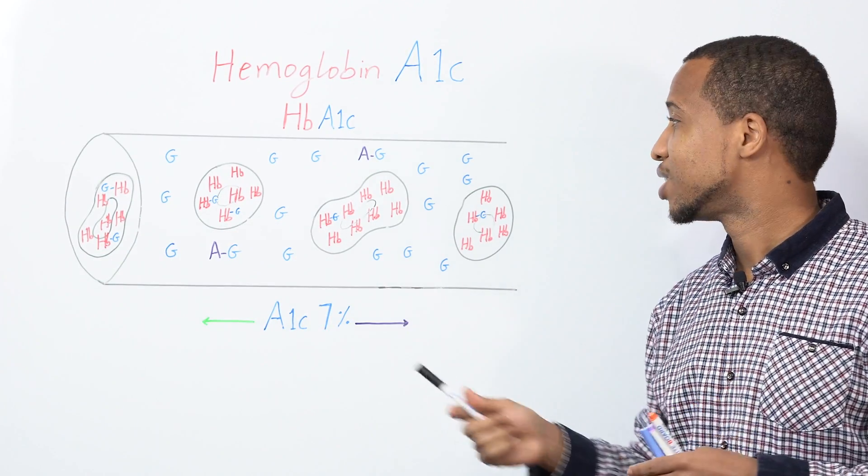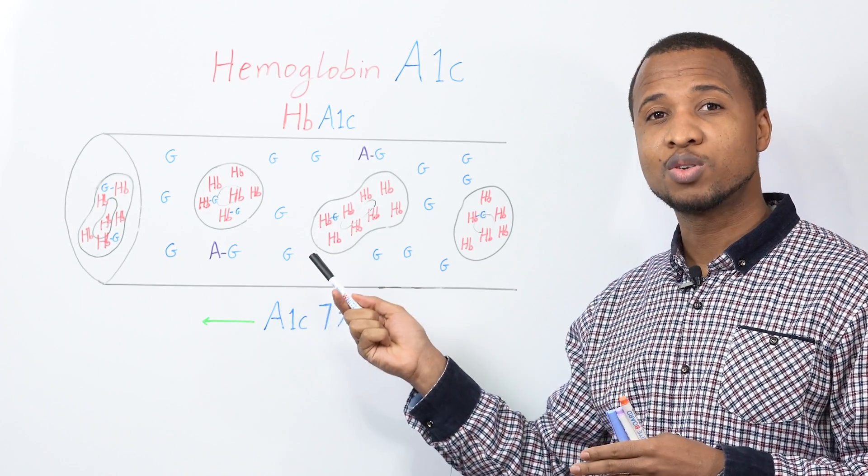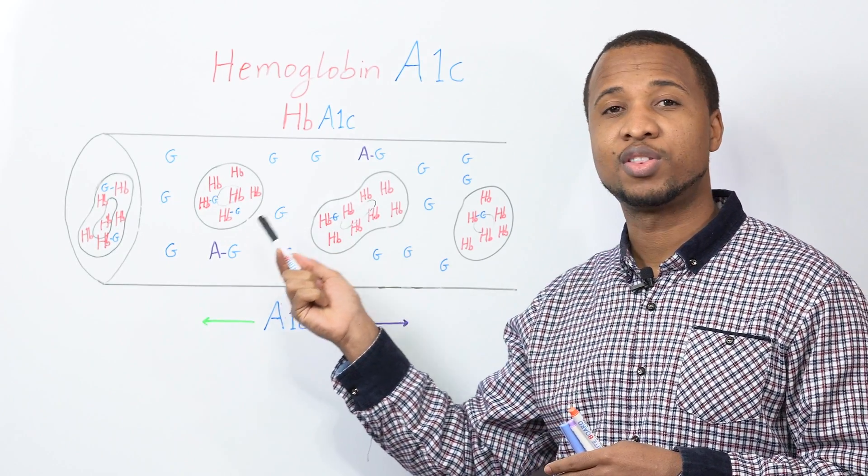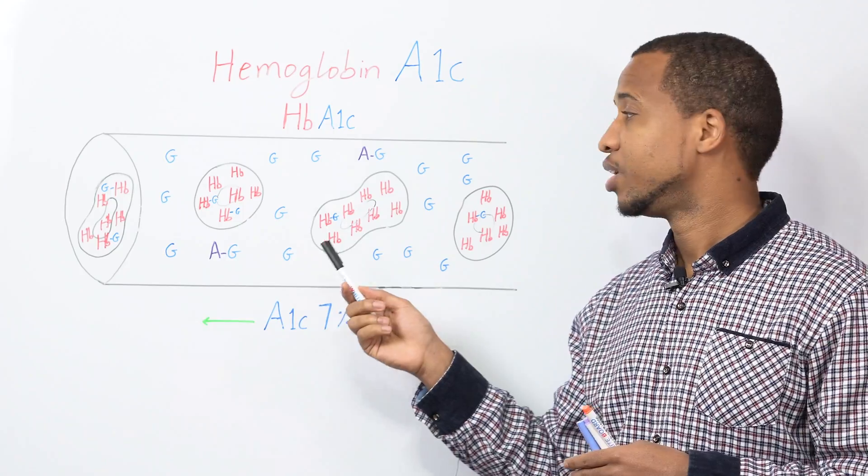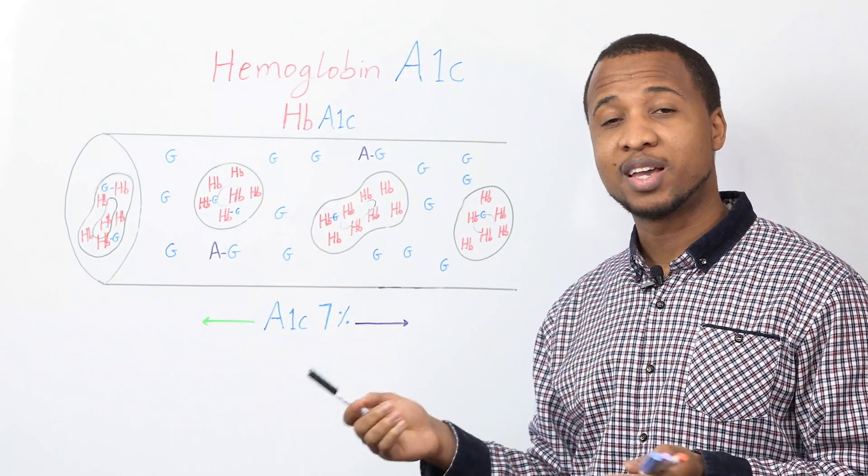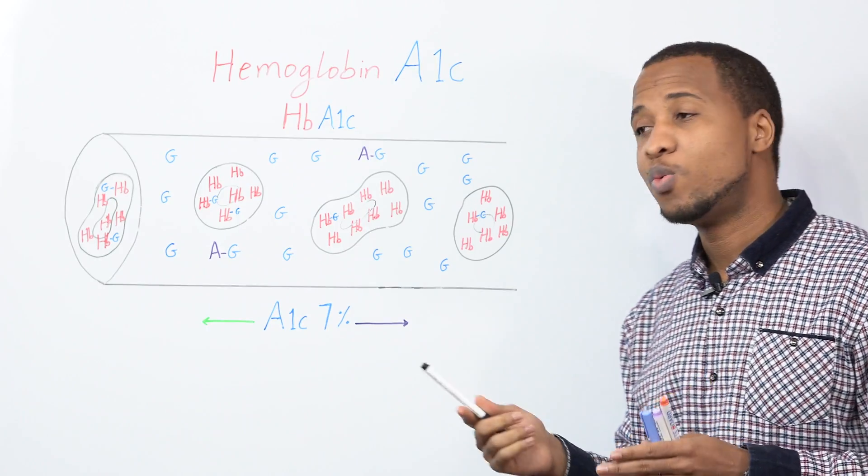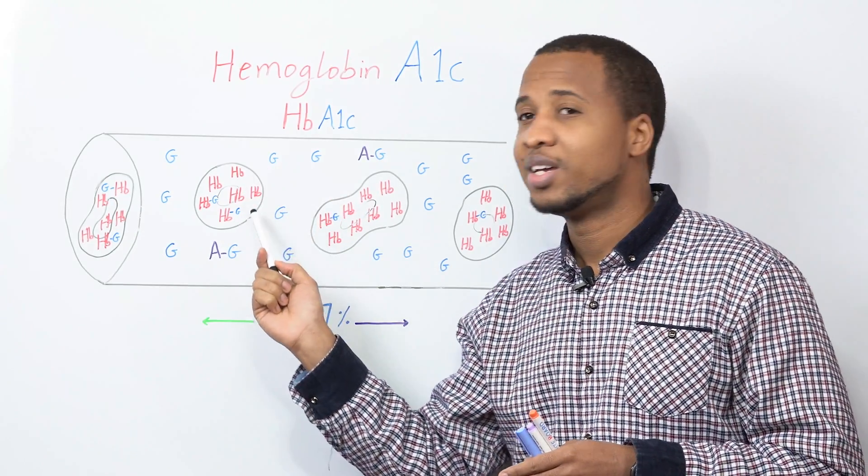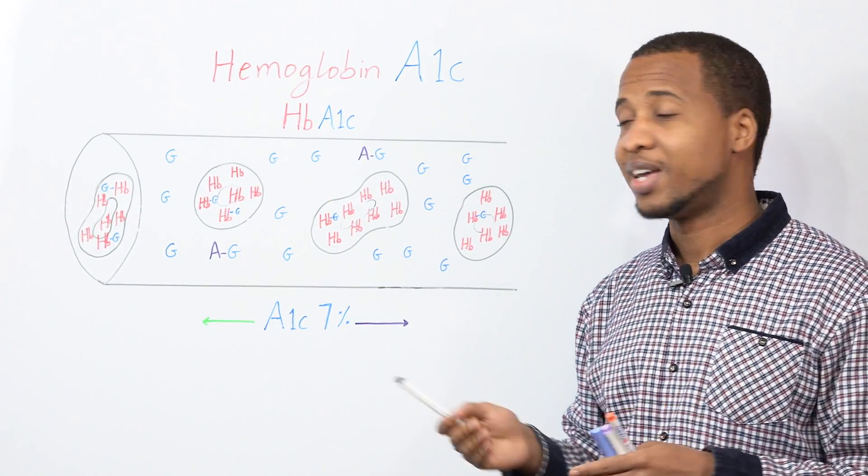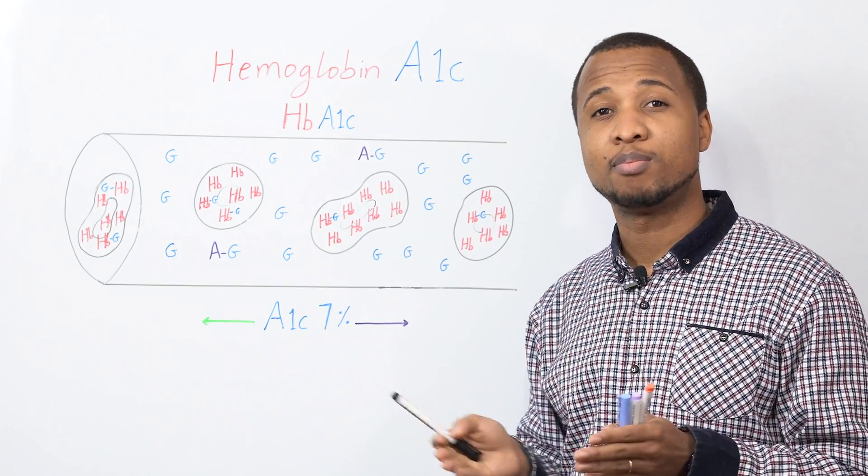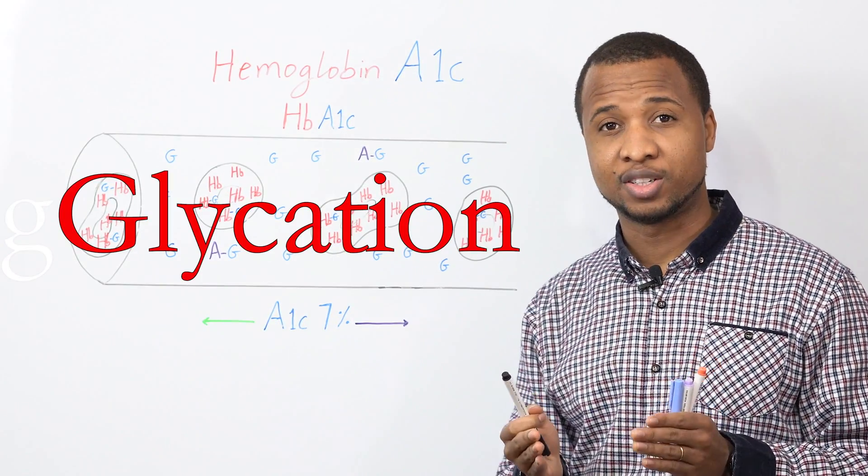Now, what we need to know is that sugar in your blood can also be attached to different things in your body. They can be attached to proteins, they can be attached to lipids, to DNA, to different things. And when this glucose is freely, randomly attached to another molecule, it's called glycation.